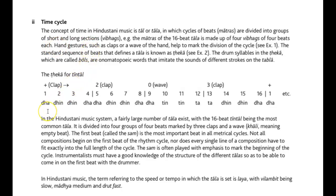An example of the cycle: clap two three four, clap, wave, clap. The standard sequence of beats that defines a tala is known as teka. The drum syllables in the teka are called bols — onomatopoeic words that imitate the sound of different strokes on the tabla.